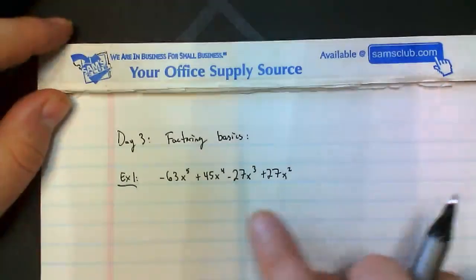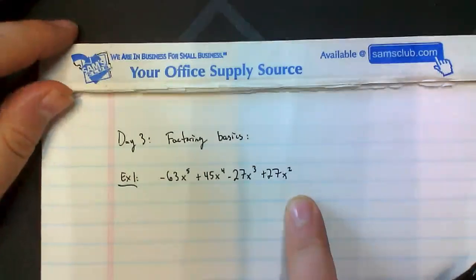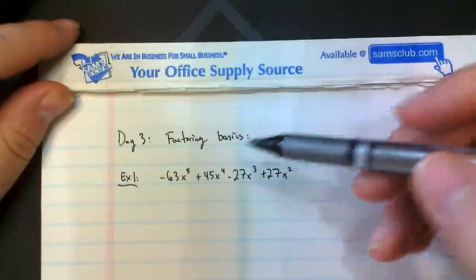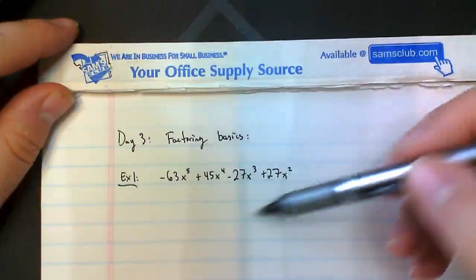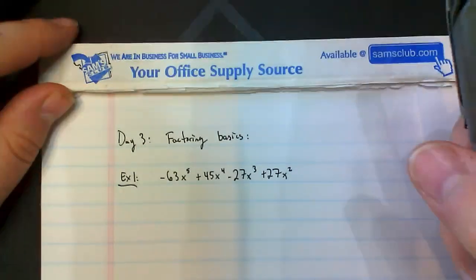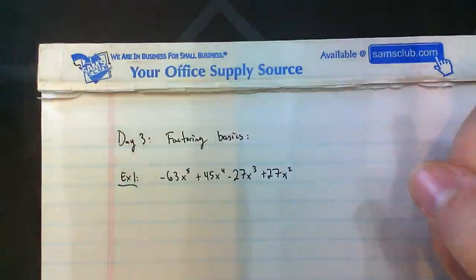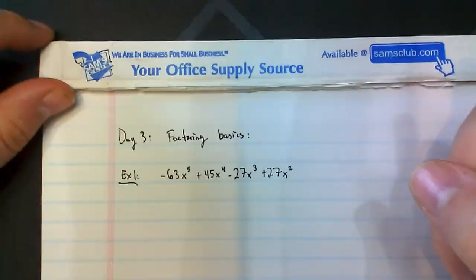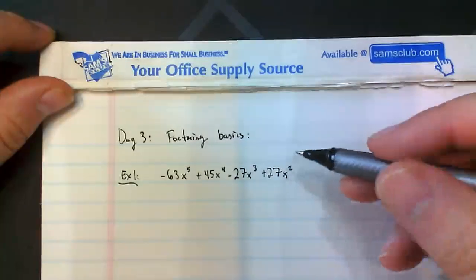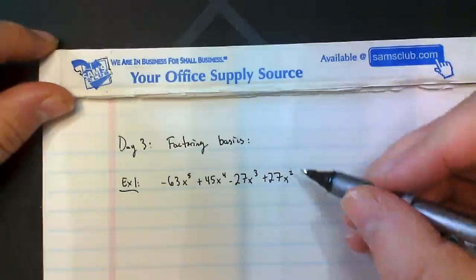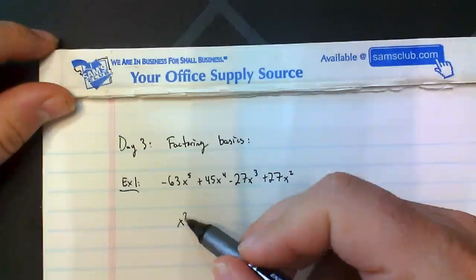For example one, we have a four term polynomial and they want us to factor out the common factor. The main idea is to make sure you're identifying a common factor with each piece. Most of the time people can see that they all have an X term in common, so you would factor out the X term. What you should be factoring out is the most X terms that you can, and in this case it is X squared.